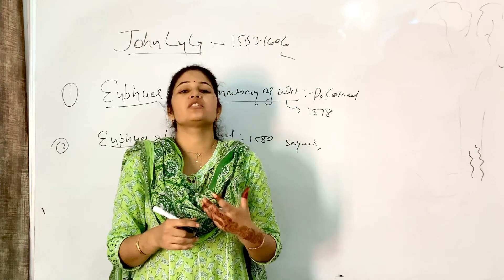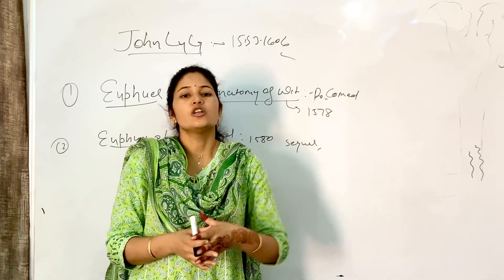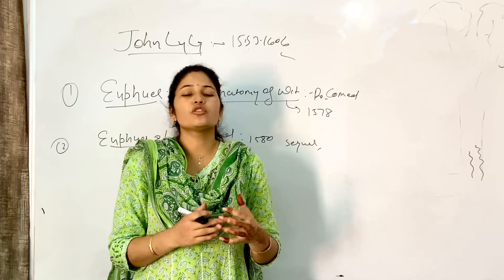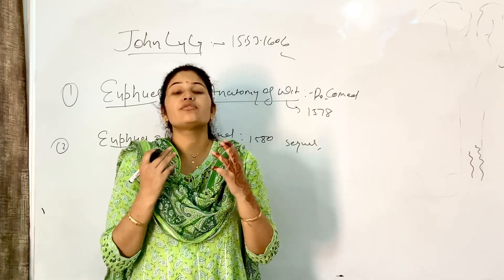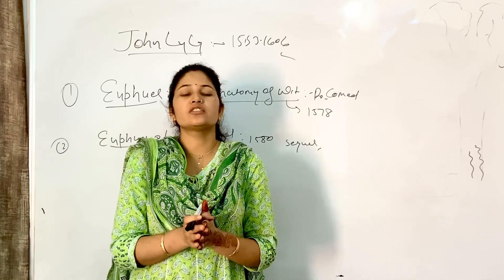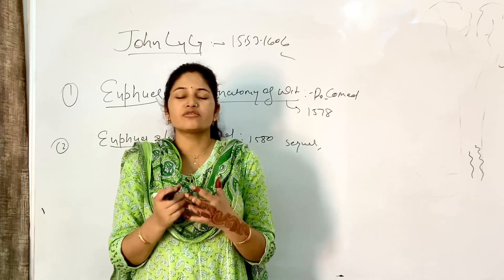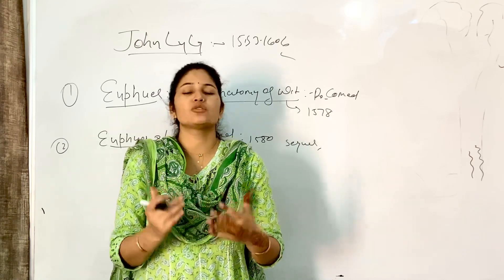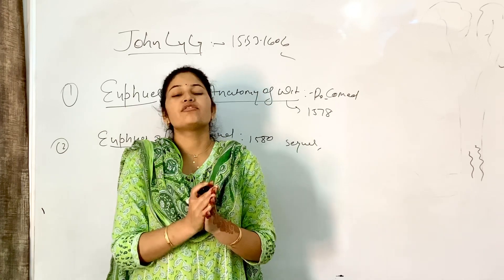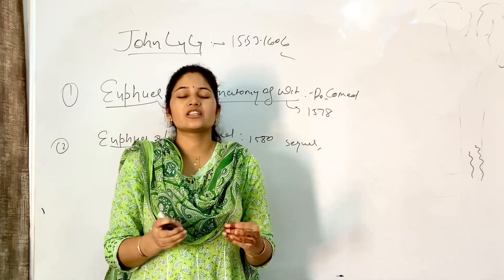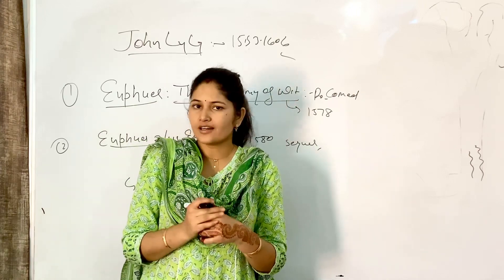Both friends, Euphues and Philotus, when Philotus comes to know that Euphues also loves Lucila, they fight with each other over Lucila and break their friendship. Now the second book starts.